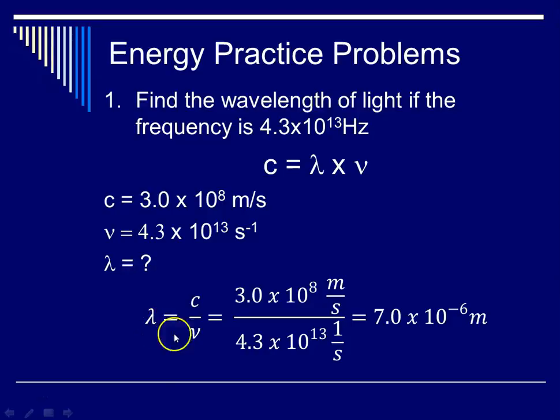And then we go ahead and rearrange our equation. So wavelength is equal to C divided by nu. So speed of light divided by frequency. We plug in our numbers, three times 10 to the 8th meters per second for C. We plug in our frequency here, 4.3 times 10 to the 13th inverse seconds. And we solve and round to two sig figs. And our answer is seven times 10 to the minus six meters. Again, we know we're in the visible region of light because we're close to 10 to the minus seven meters.